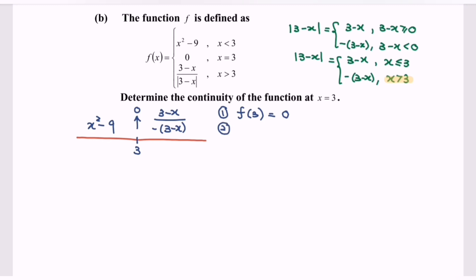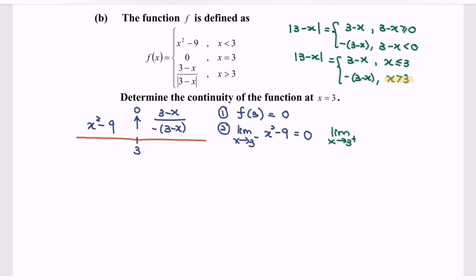Second step: does the limit exist when x equals 3? The limit as x approaches 3 from the left uses the function x squared minus 9. Substituting the value 3, we obtain y approaching 0. Next, the limit as x approaches 3 from the right uses the function (3 minus x) over negative (3 minus x). Simplifying, we get negative 1, so the value of y approaches negative 1.